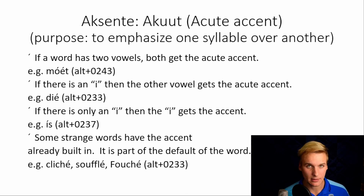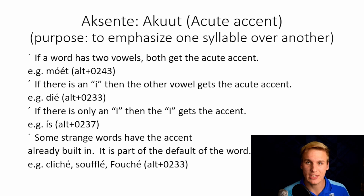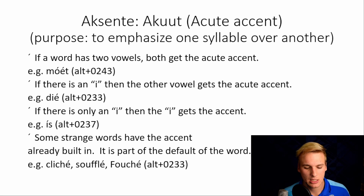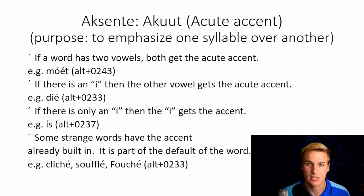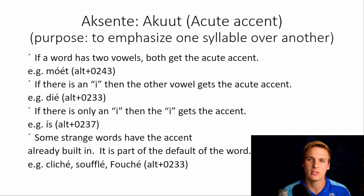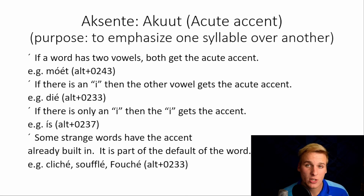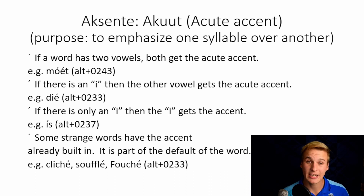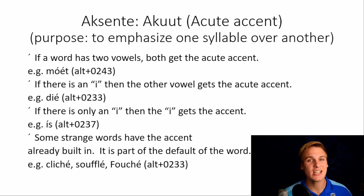For example, dié — this boy, rather than just saying 'the boy.' If there is only an i, then the i gets the accent: díé seun is means the boy is a person, for certain. Some words have the accent already built in — it's part of the default word. For example: cliché, soufflé, and fouché. Cliché and soufflé we know, but fouché is a surname.